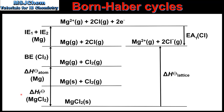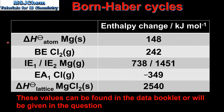In this video we'll be calculating the enthalpy change of formation of Magnesium Chloride. In this table we have the enthalpy change values required: the enthalpy of atomization of Magnesium, the bond energy of Chlorine, the first and second ionization energies for Magnesium, the first electron affinity of Chlorine, and the lattice enthalpy of Magnesium Chloride. Note that we could also use the enthalpy of sublimation for Magnesium, which has the same value as the enthalpy of atomization. We could also use the enthalpy of atomization of Chlorine, which we would have to multiply by 2 to equal the bond energy.